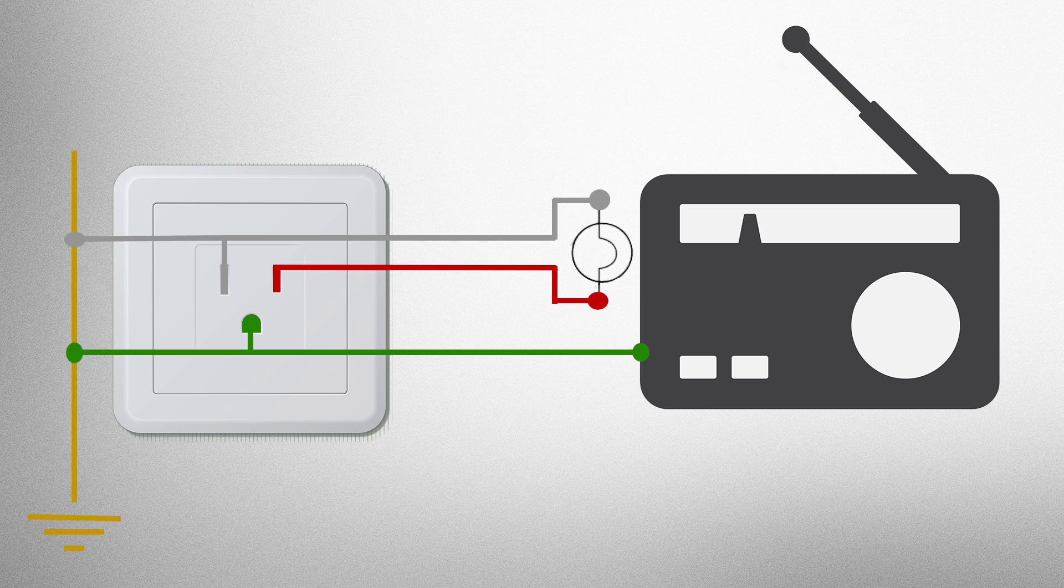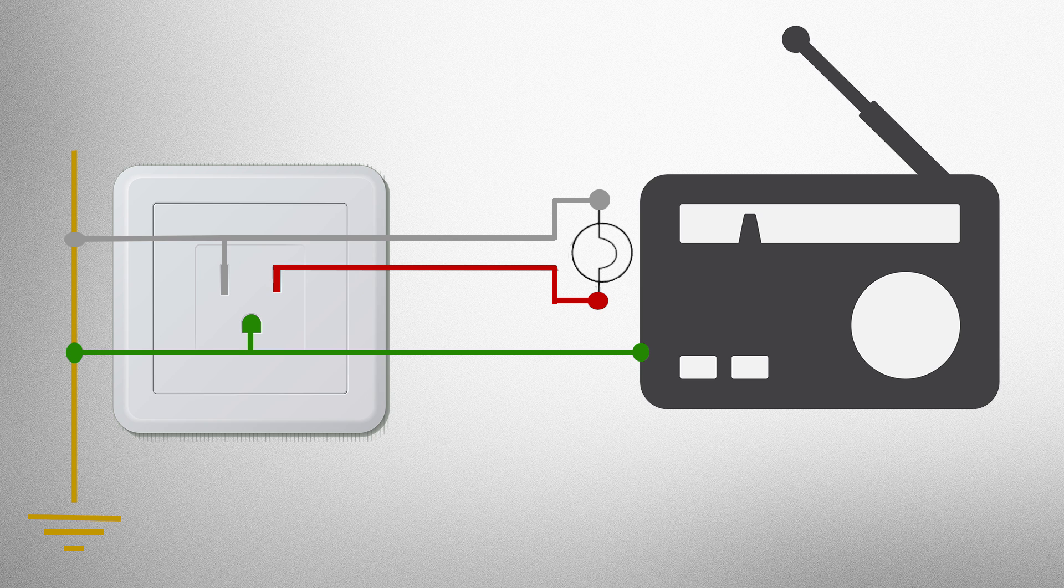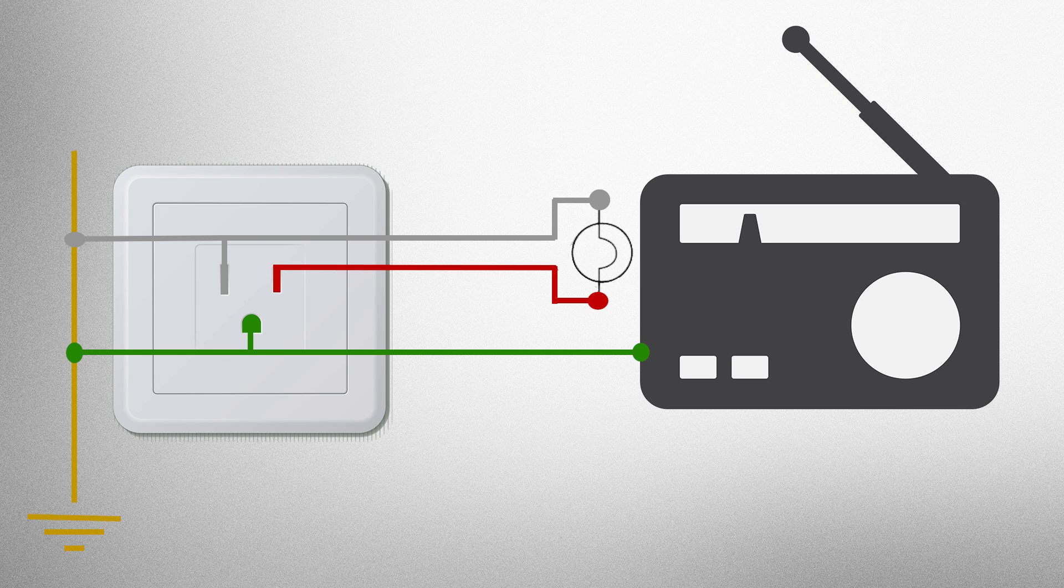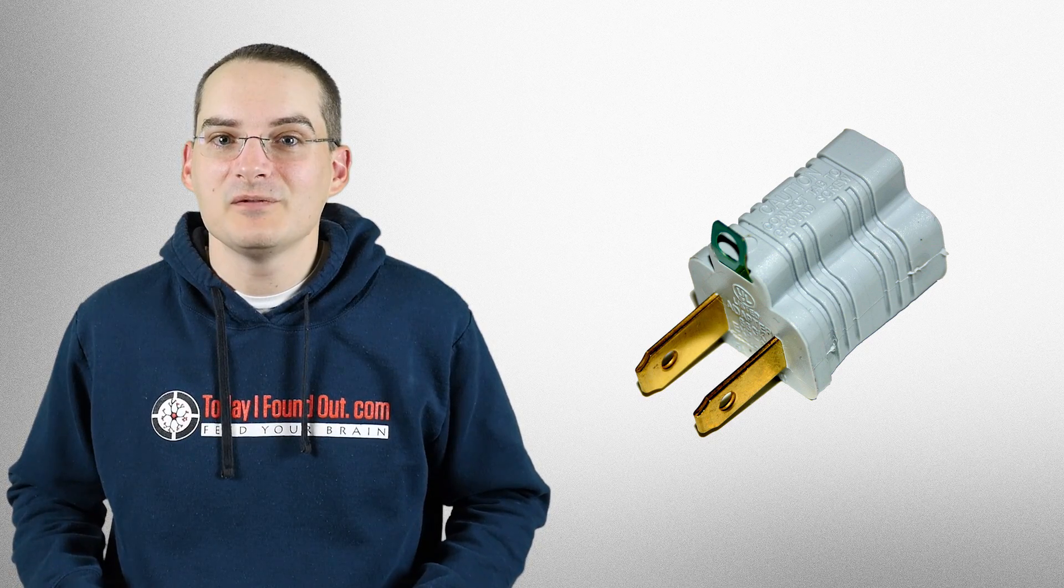It simply is used to connect the external conductive parts of the device to the earth, and thus in normal operation is completely unnecessary. This is why you can use a three prong to two prong plug adapter to bypass having to use the ground line, and the device will still work just fine.